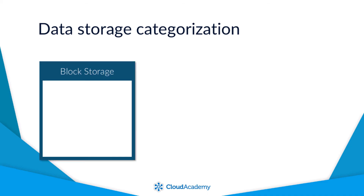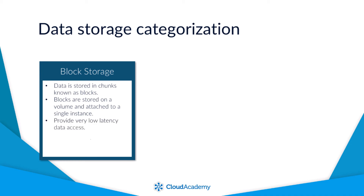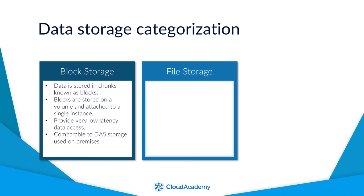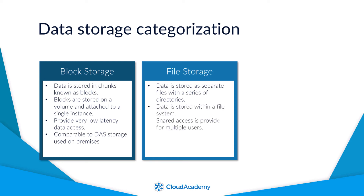Block storage stores the data in chunks known as blocks, and these blocks are stored on a volume and attached to a single instance. They generally provide very low latency and can be considered similar to your directly attached disks within your own data center. File storage: your data is stored as separate files within a series of directories, forming a data structure hierarchy. The data is stored on top of a file system and provides shared access allowing for multiple users to access the data. File storage in AWS can be associated to your network attached storage systems you may have in your own data center.